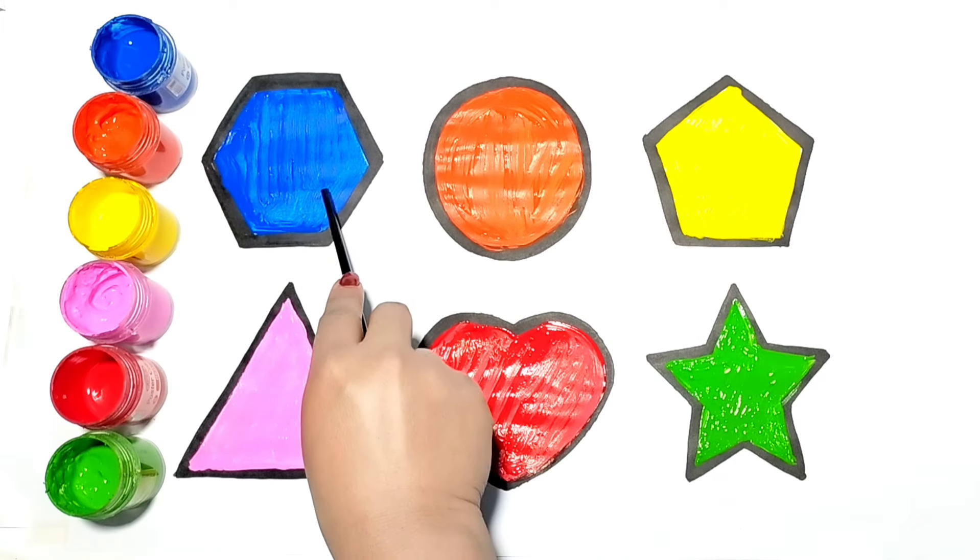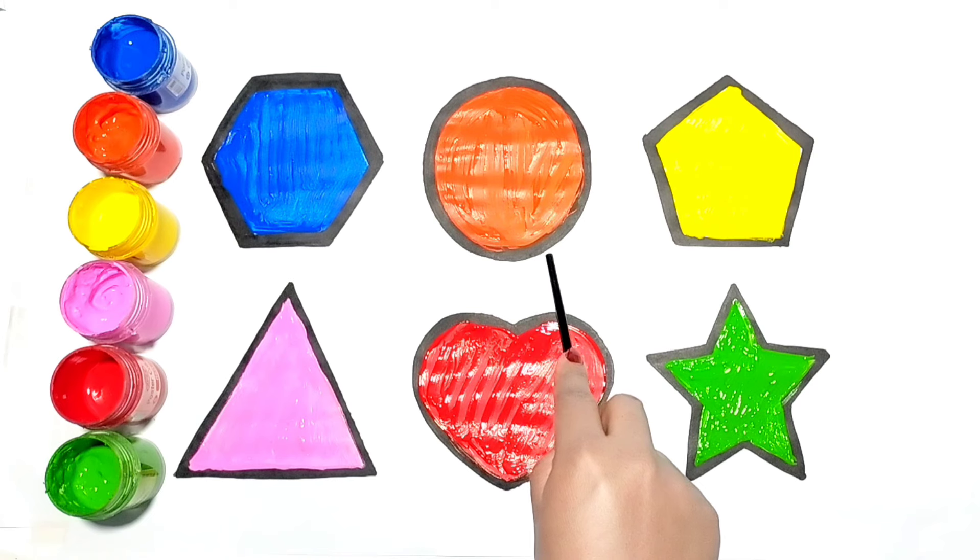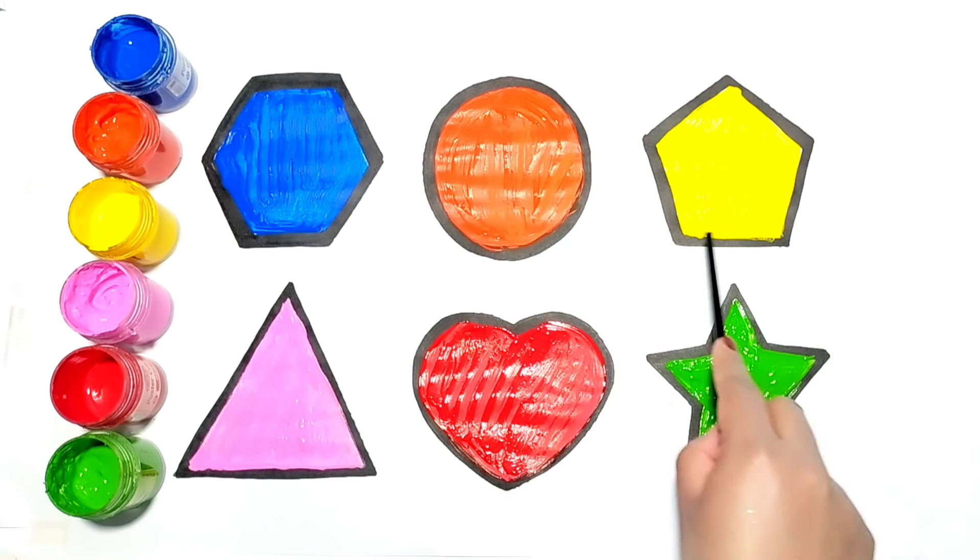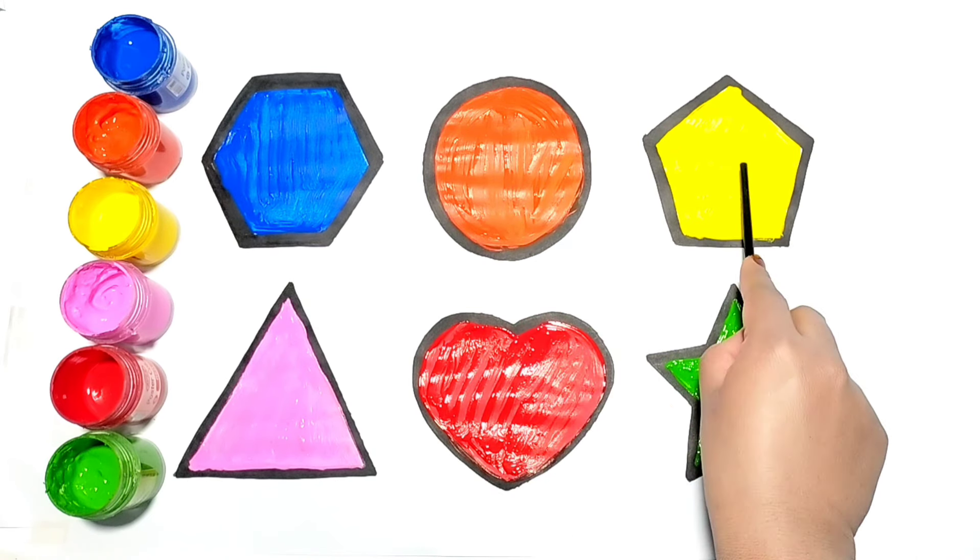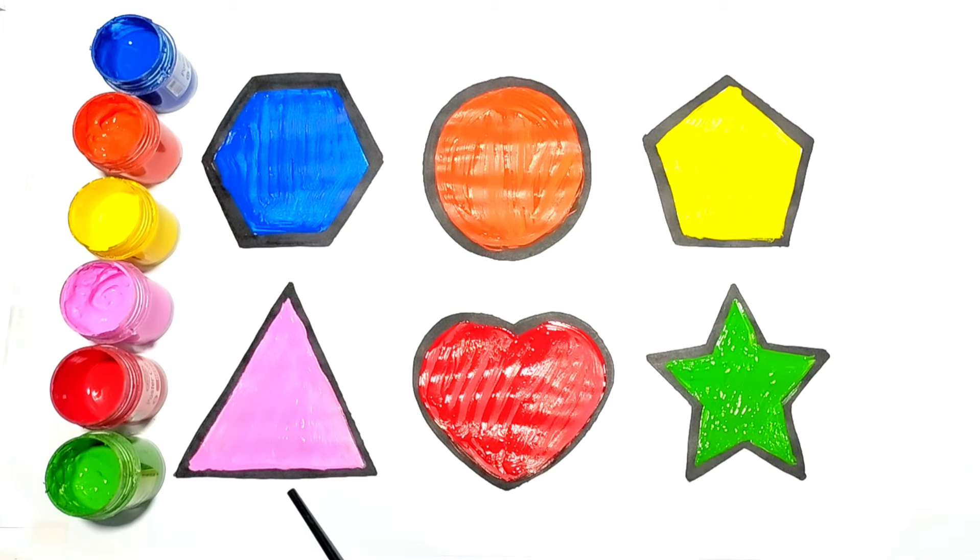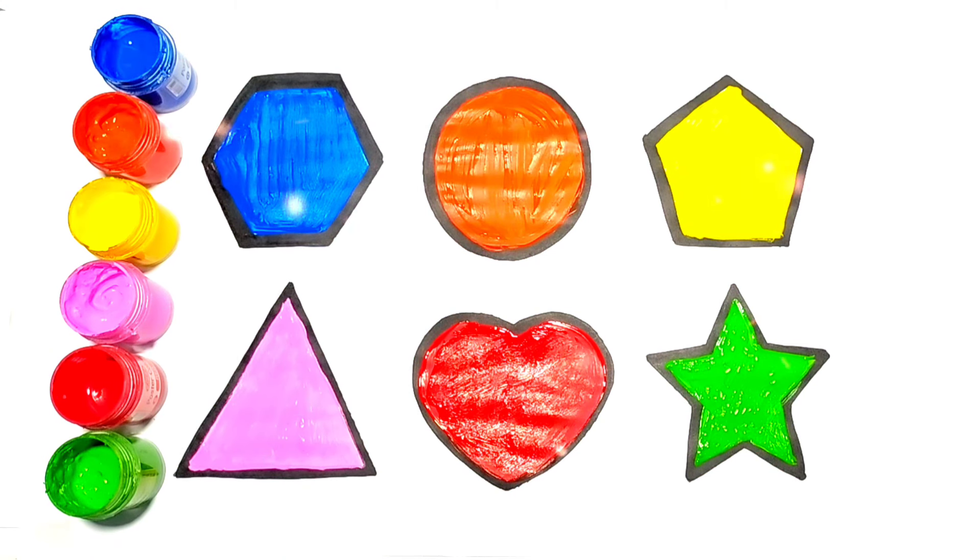Hexagon dark blue, circle orange, pentagon yellow, triangle pink, heart red, star green. All the 2D shapes are looking so beautiful. See you on the next video.